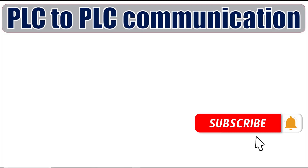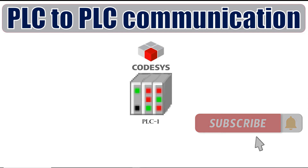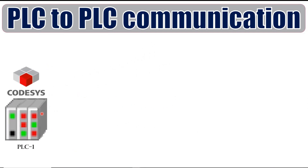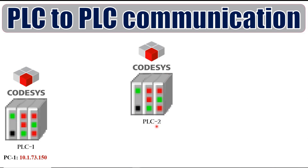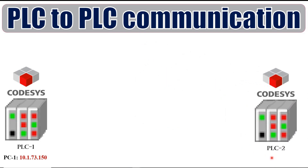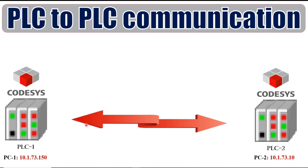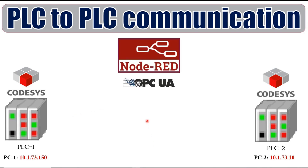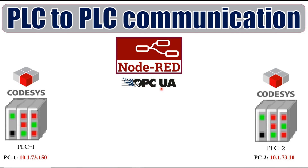Let's get started. Let us assume that we have two CODESYS PLCs. The first one is called PLC1 and is running on PC1 with a shown IP address. The second one is called PLC2 and is running on PC2 with the given IP address. These two PLCs are CODESYS CONTROL-WIN virtual PLCs, but in general this applies to standalone PLCs as well. If I want to have communication between these two PLCs to exchange some information like the value of a variable, one relatively easy way is to use Node-RED and OPC UA as a mediator, which receives the data from one PLC and passes it to the next one.